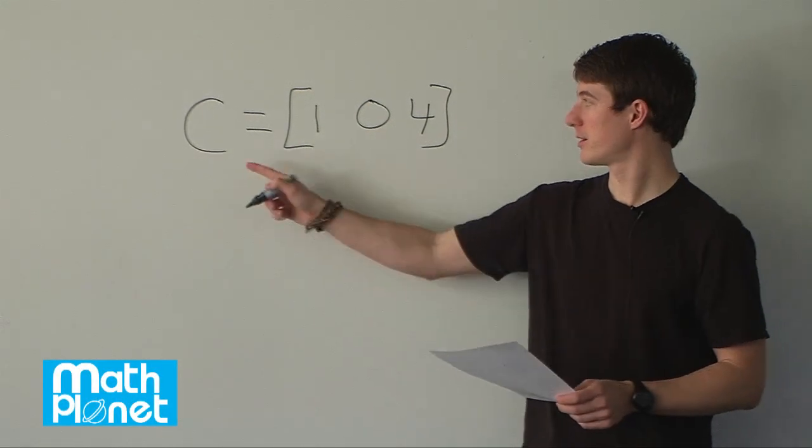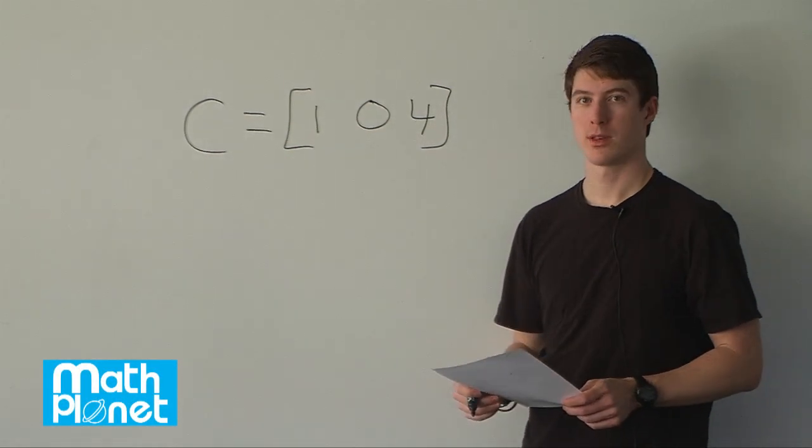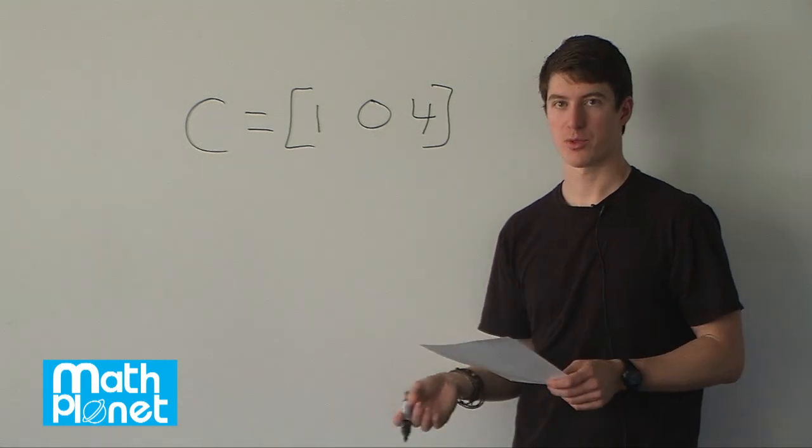We have a matrix C as written here. The question is, how many rows and columns does it have?